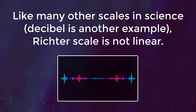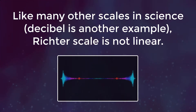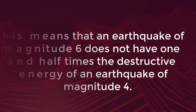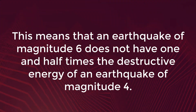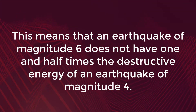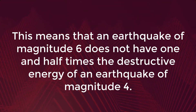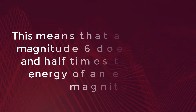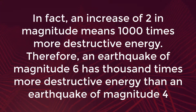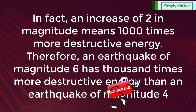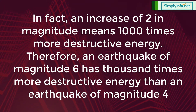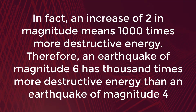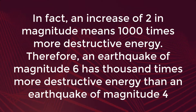Like many other scales in science — the decibel is another example — the Richter scale is not linear. This means that an earthquake of magnitude 6 does not have one and a half times the destructive energy of an earthquake of magnitude 4. In fact, an increase of 2 in magnitude means 1000 times more destructive energy. Therefore, an earthquake of magnitude 6 has 1000 times more destructive energy than an earthquake of magnitude 4.